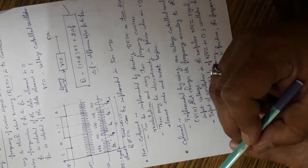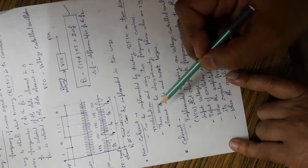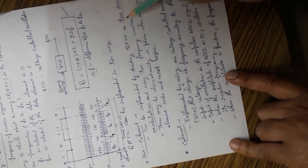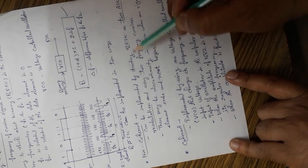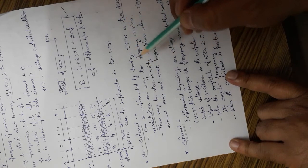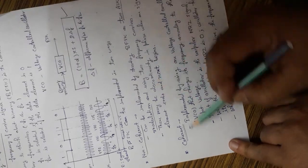Non-coherent, we have already discussed in our previous lectures, that we are going to use two ASK modulators and then we will combine them and we will get the FSK signal.